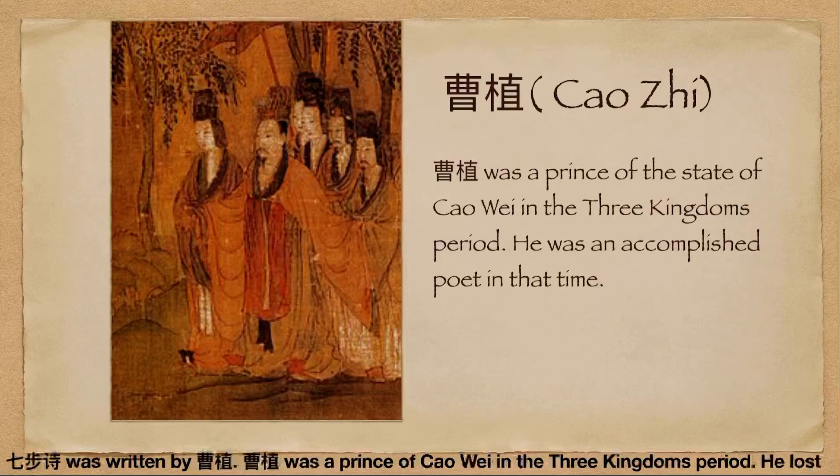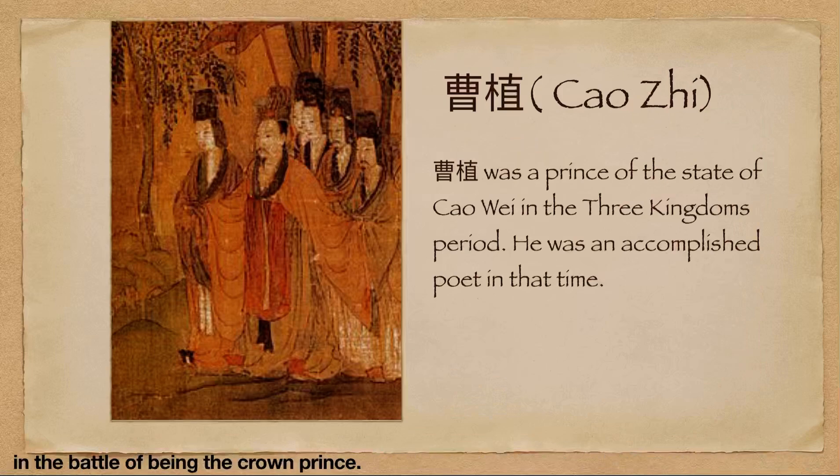Qi Bu Shi was written by Cao Zhi. Cao Zhi was a prince of Cao Wei in the Three Kingdoms period. He lost in the battle of being the crown prince.